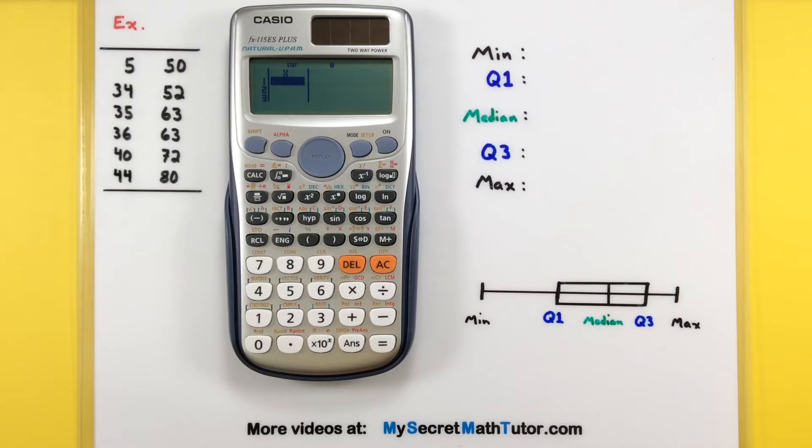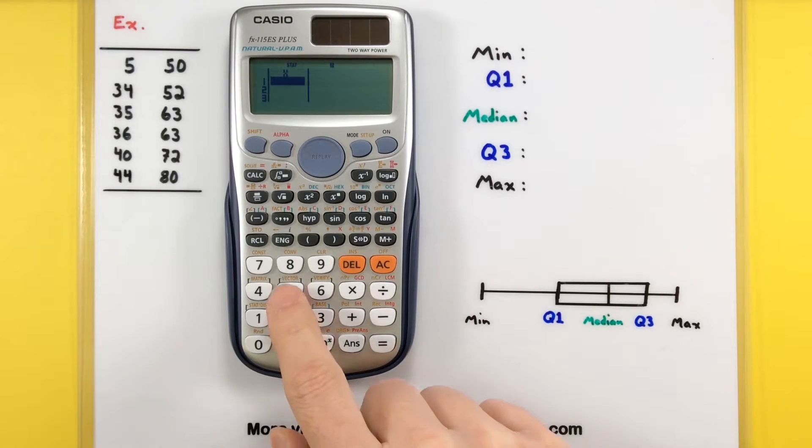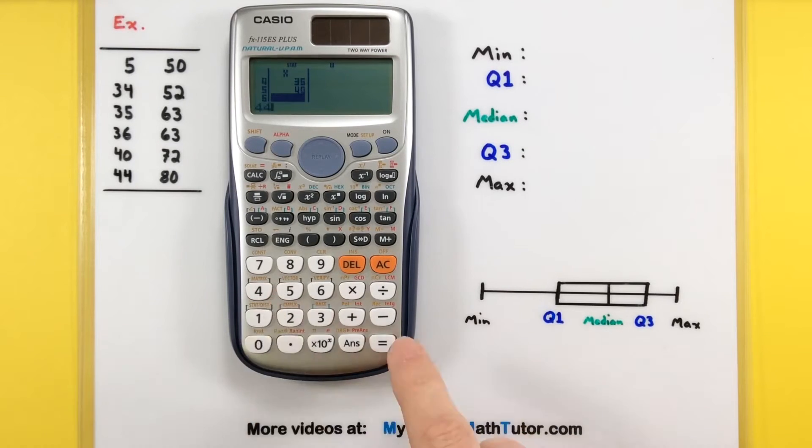And now you just want to enter in each of these values one at a time. I'll go ahead and speed up the video so you're not waiting around, but let's get them all in there. Looks like we have all 12 of the data values in there. Now it's time to get on to the next step.